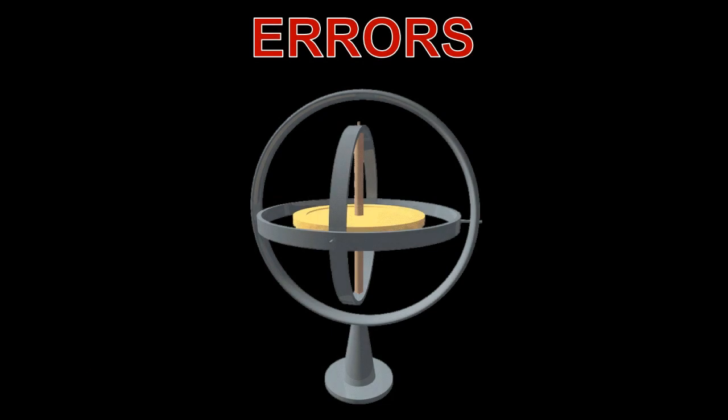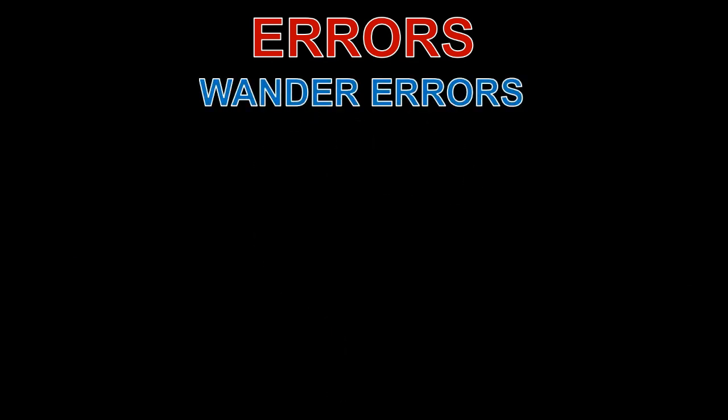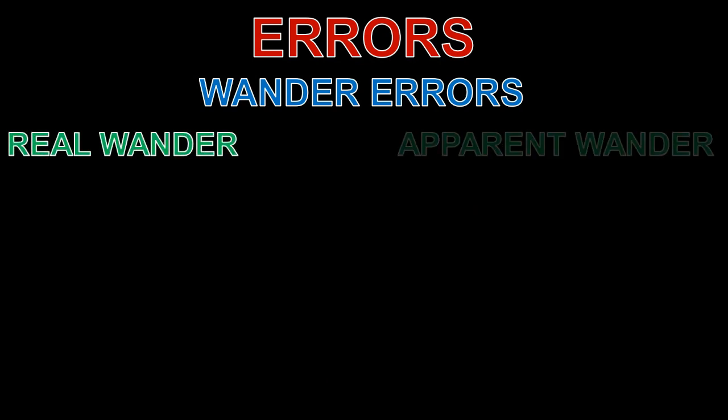As with any other instrument, a gyroscope will suffer from errors. Specific to the gyroscope, errors are known as wander errors. These are subdivided into two aspects, real wander, and apparent wander.